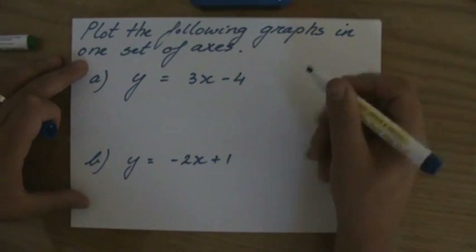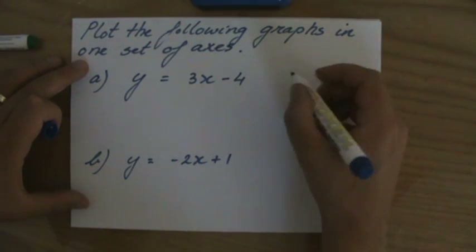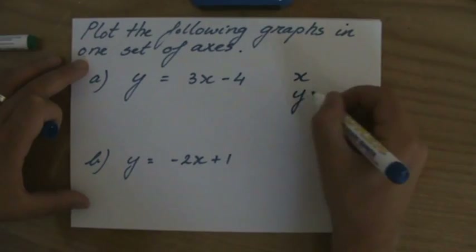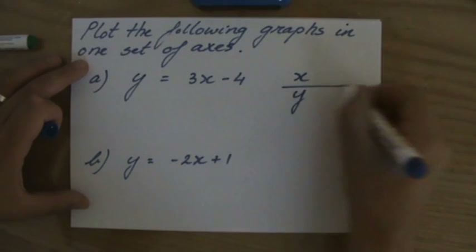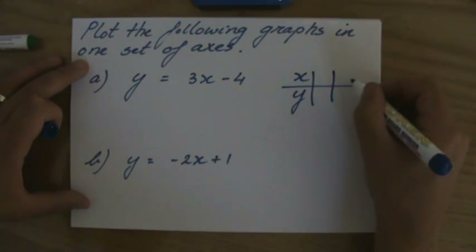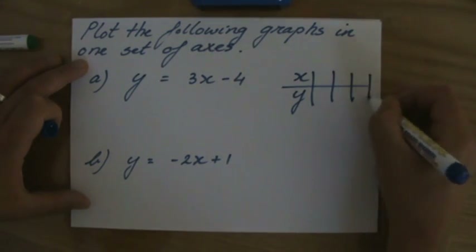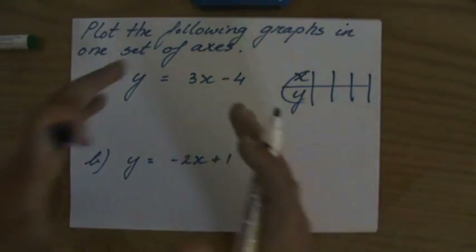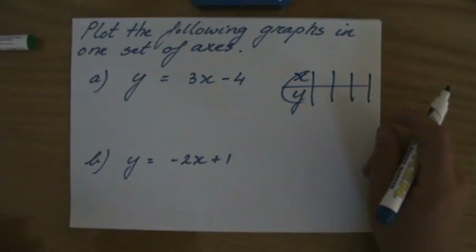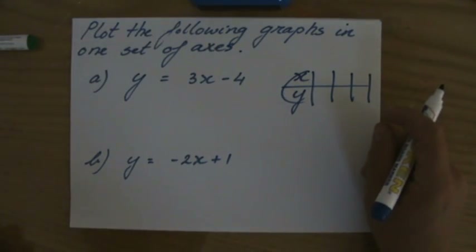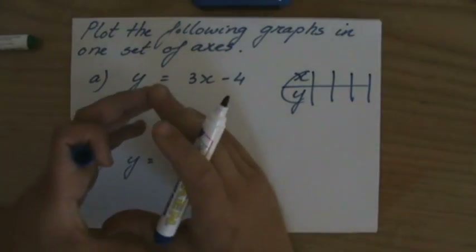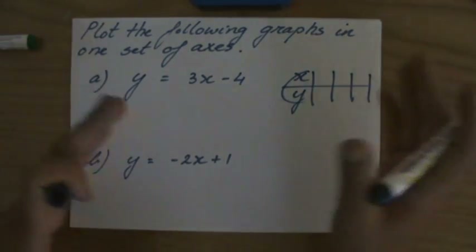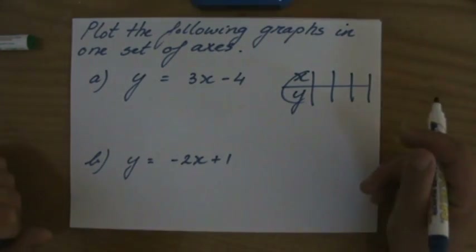So let's get started with the first one. I'm making a fishbone table — I call it a fishbone table because it looks like a dead fish — and I'm going to organize the coordinates I choose to plot in that table. I can choose anything for x and then find the corresponding y coordinate.